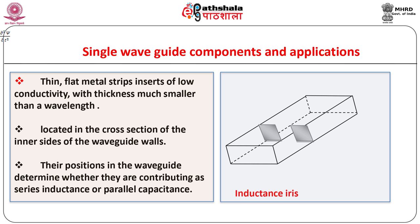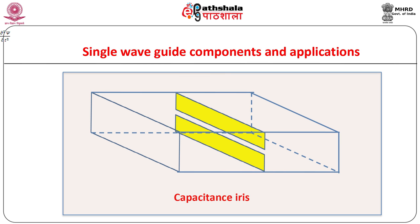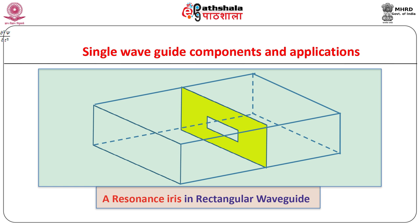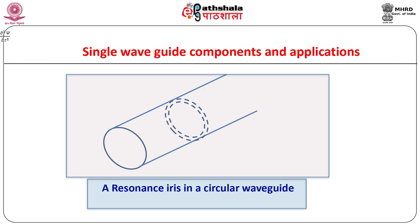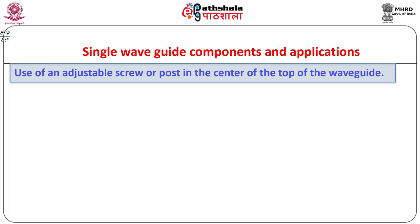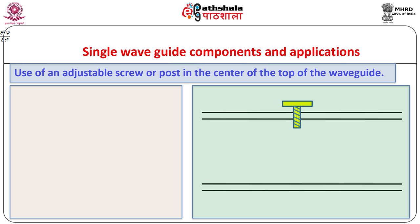Inductance iris in the case of a rectangular waveguide is as shown. Capacitive iris for the rectangular waveguide is as shown. Note an interesting arrangement of plates working as a resonance iris in the rectangular waveguide. Have a look at a resonance iris in the case of a circular waveguide — it looks very simple and interesting. Instead of iris we may use an adjustable screw or post in the centre of the top of the waveguide.